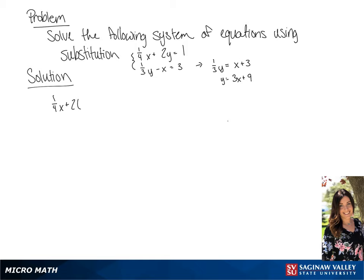So we get 1/4x plus 2 times 3x plus 9 equals 1, which gives us 1/4x plus 6x plus 18 equals 1.